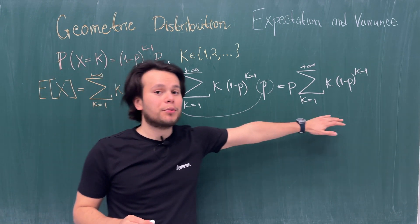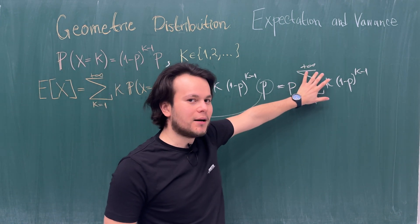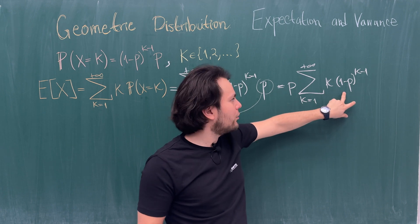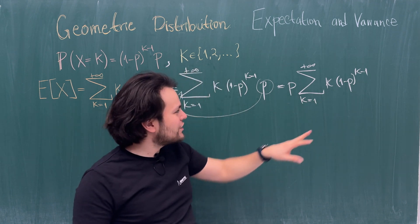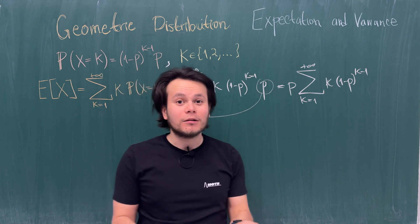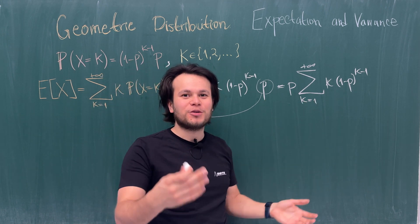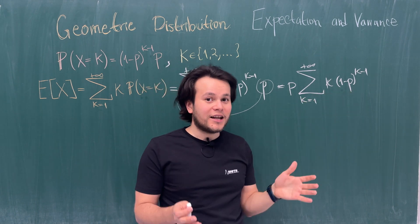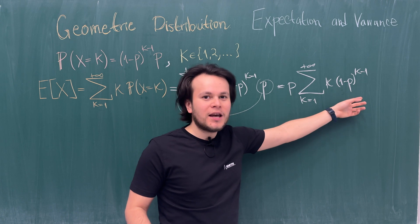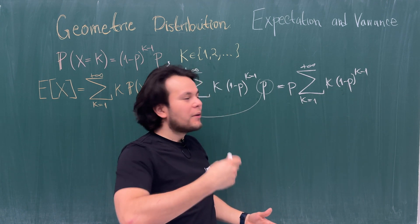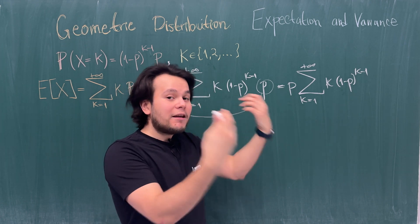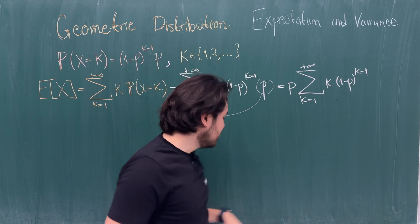Notice that k · (1-p)^(k-1) looks familiar. If we replace (1-p) with x, we get k · x^(k-1), which looks like the derivative of x^k. So k · (1-p)^(k-1) is the derivative of (1-p)^k with respect to p. From calculus, we can compute this series as the derivative of the series of (1-p)^k.